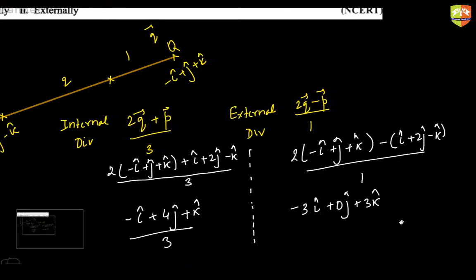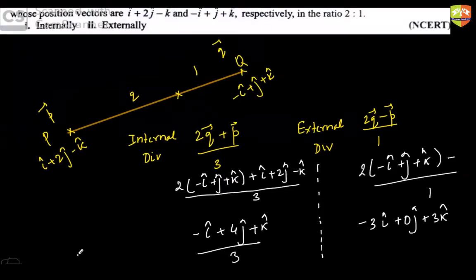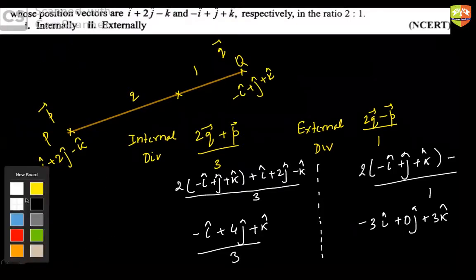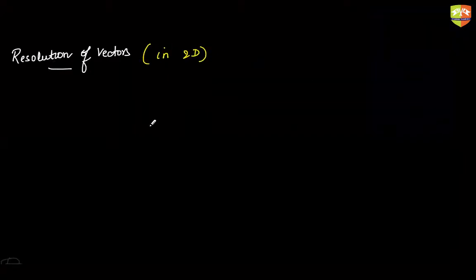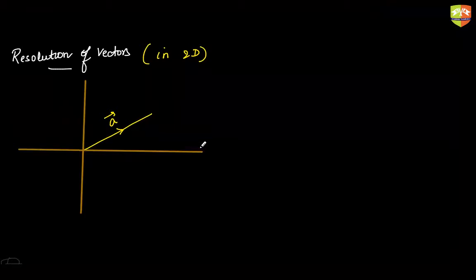Now we are ready to take up the concept of resolution of vectors. First we'll talk about resolution of vectors in 2D. Let's say we have a vector a — I can resolve this vector along two perpendicular directions. Normally we choose those two perpendicular directions as the x-axis and the y-axis, so this vector can be resolved along the x direction and y direction.